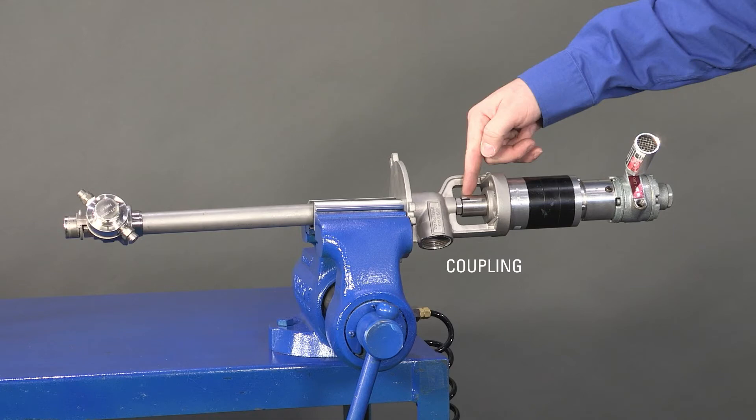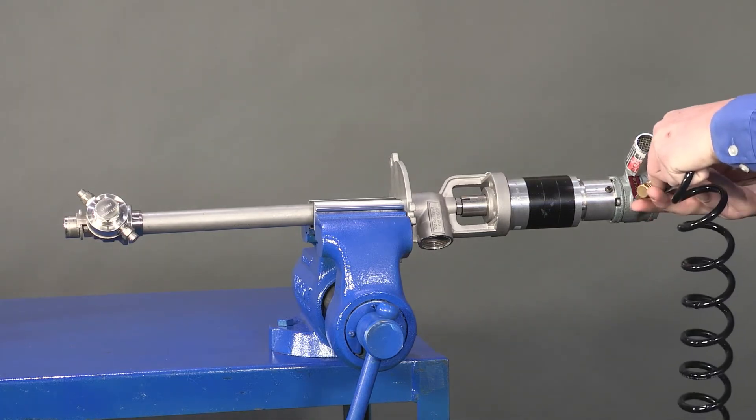Inspect the coupling between the gearbox and the inlet body. While supplying compressed air to the motor, check the coupler for rotation.